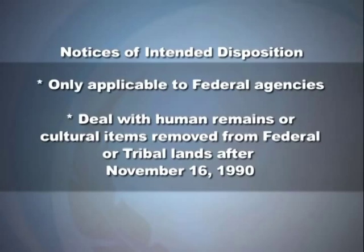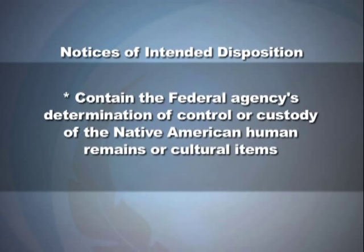Let's discuss the two types of notices: newspaper notices of intended disposition and Federal Register notices. Notices of intended disposition are only applicable to federal agencies and deal with human remains or cultural items removed from federal or tribal lands after November 16, 1990. They contain the federal agency's determination of control or custody of the Native American human remains or cultural items.